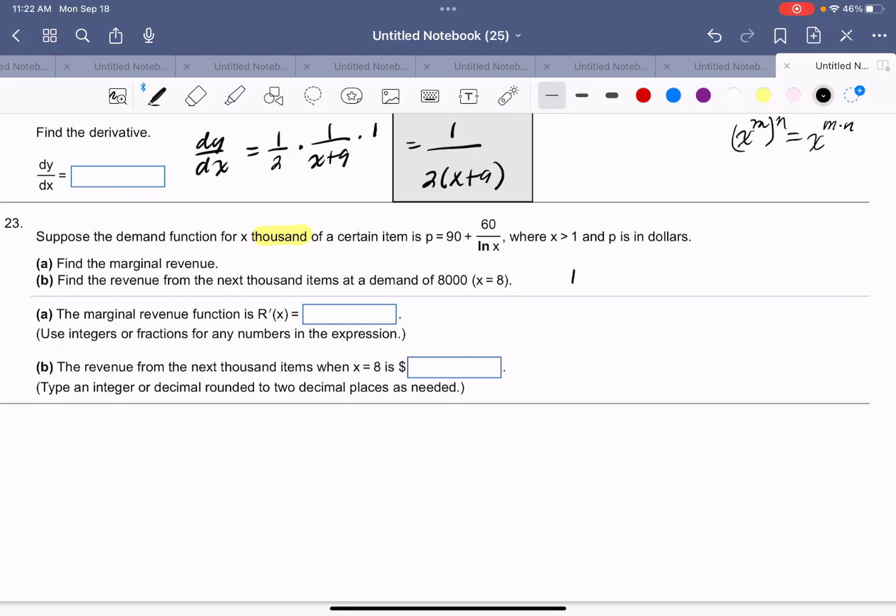Well, we have to remember what revenue is. Revenue is price times quantity. And they've given us a price, 90 plus 60 over the natural log of x, and we know that we're selling x of these, more than 1, so this is going to be times x, our quantity. So our revenue of x is 90 times x plus 60x over the natural log of x.